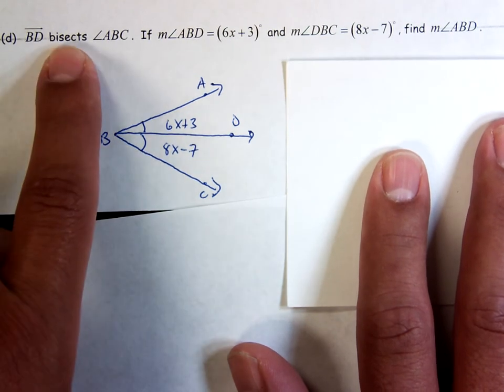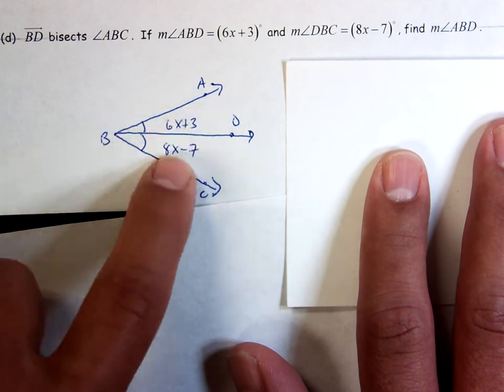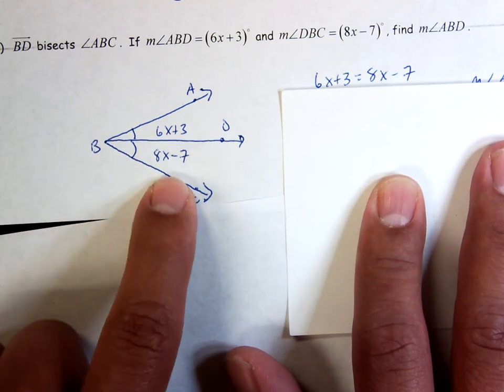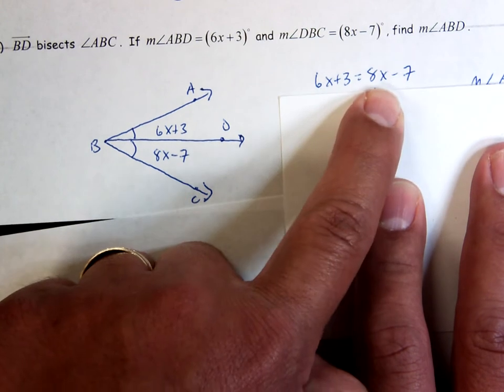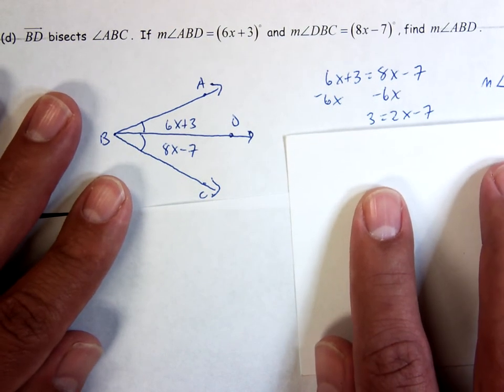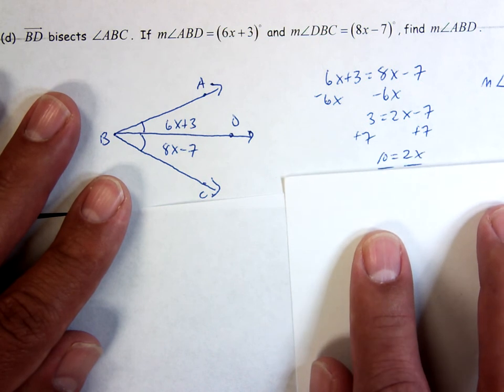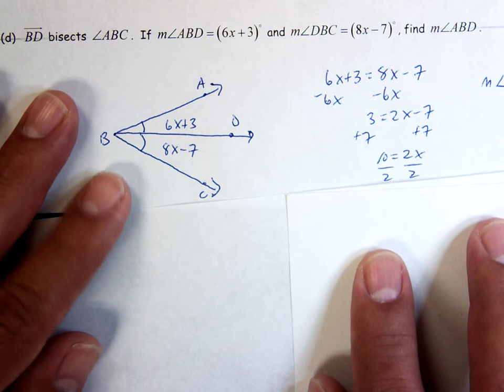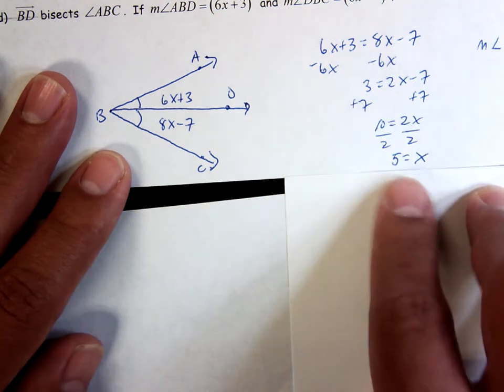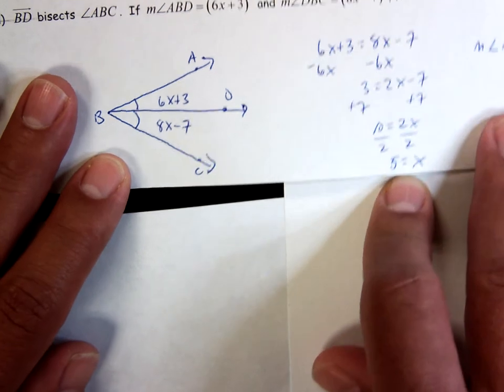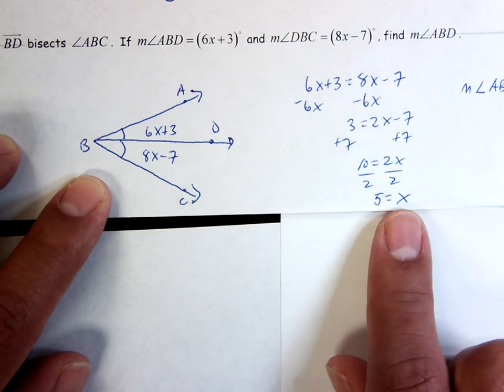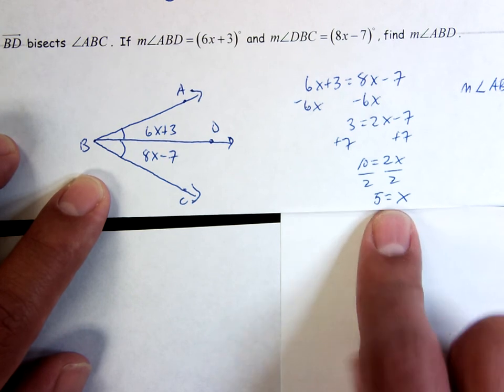If I have an angle bisector, which it says that I do, what must be true about these two angles? They must be congruent to each other. So that means that 6X plus 3, this angle, must be equal to 8X minus 7, which is this angle. So that's my equation. I subtract 6X from both sides, which gives me 3 equals 2X minus 7. I add 7 to both sides, which gives me 10 is equal to 2X. I divide both sides by 2, and I get X is equal to 5. This is where, on a test, a lot of us are going to be tempted to stop. We did all our math, I solved for X, so I must be done. But let's go back to the question. It asked me to find the measure of angle ABD. It didn't tell me to find X. Finding X was not the final answer, but I had to find X first in order to get ABD.